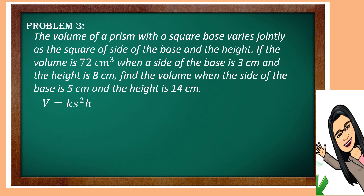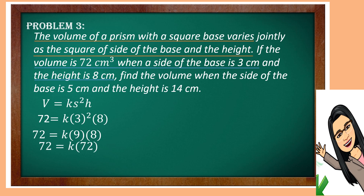Then substitute the volume which is 72 cubic centimeters when the side of the base is 3 centimeters. So we will get 72 is equal to K times 3 squared times H. Let us square 3, which is 9. Then multiply by 8, we will get 72. Dividing both sides by 72, we will get the value of K as 1.